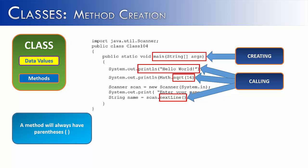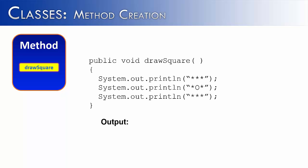So let's see exactly how we would create a method. We're going to create a method called drawSquare. It's a fairly simple method. All it's going to do when it's called is print out a square with asterisks on the outside and an O in the middle. You'll notice that the top of the method, public void drawSquare, looks very similar to the main method, public static void main. We're going to break down the different parts of how to create a method.